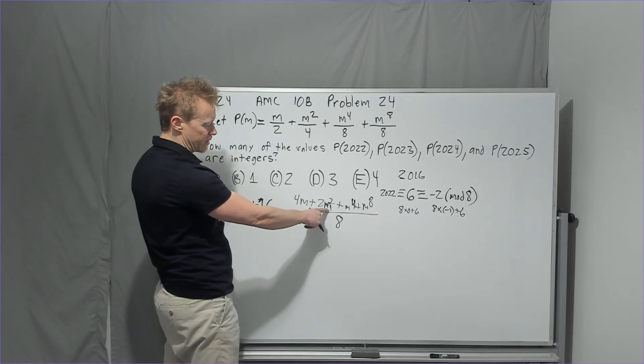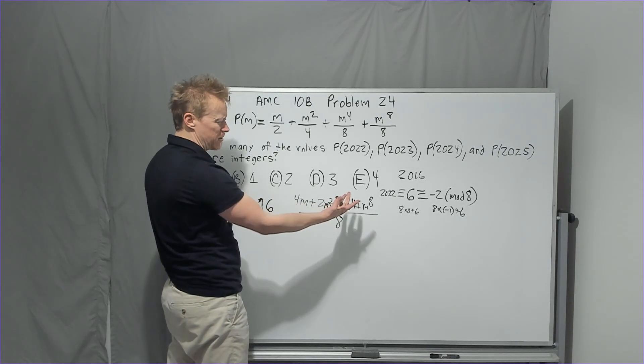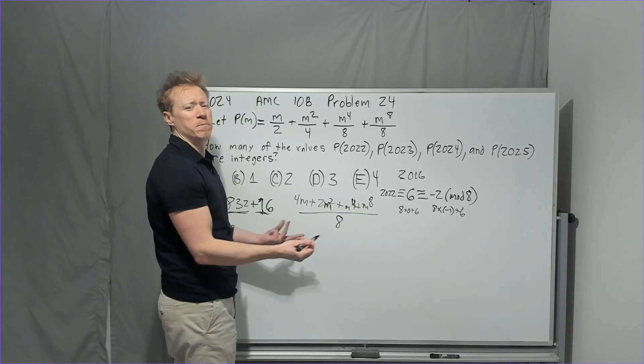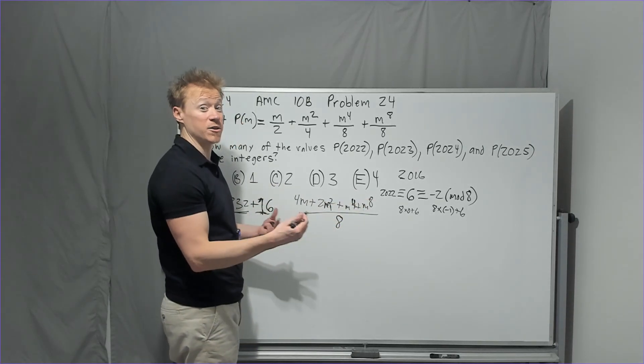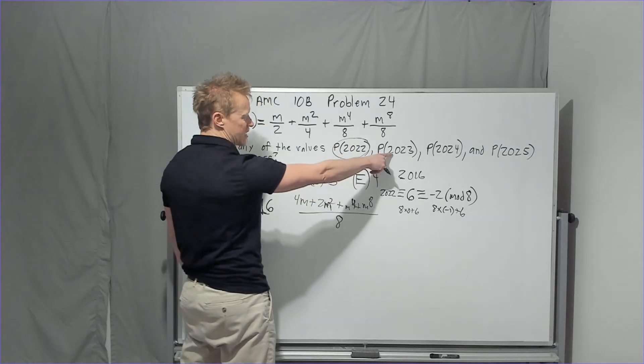If I put negative two in here, I'm squaring it. That's eight itself. This is going to be negative two to the fourth and negative two to the eighth, both of which will be divisible by two to the third, which is eight. So this one, yes, good.